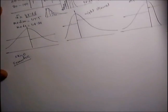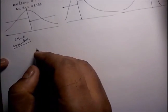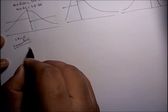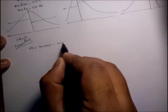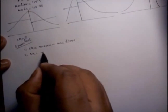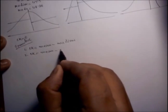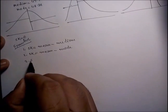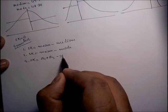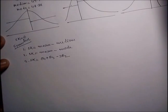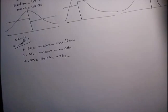The measurement of skewness can be done using a few useful formulas. The absolute measures include: mean minus median, mean minus mode, or Q1 plus Q3 minus 2·Q2. These are absolute measures of skewness, meaning they carry units.